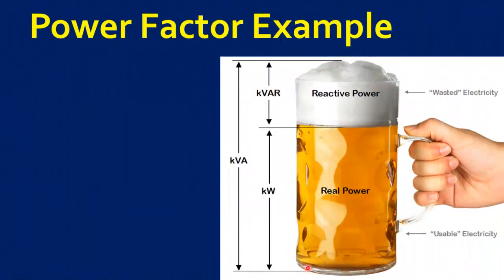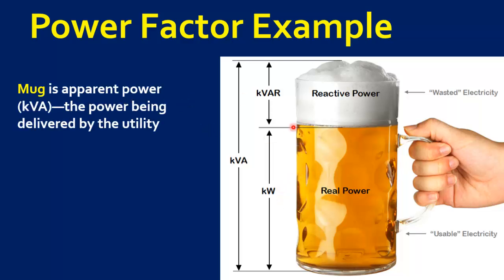Now let's try to understand the effect of power factor with the help of an example. This example is called beer analogy. Here you can see a mug full of beer. The mug represents apparent power KVA,